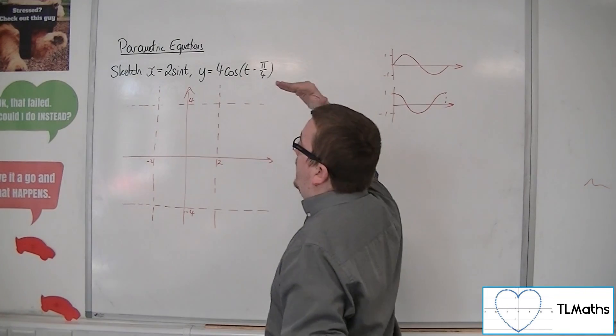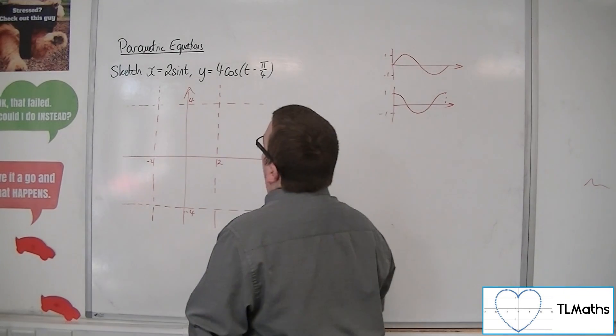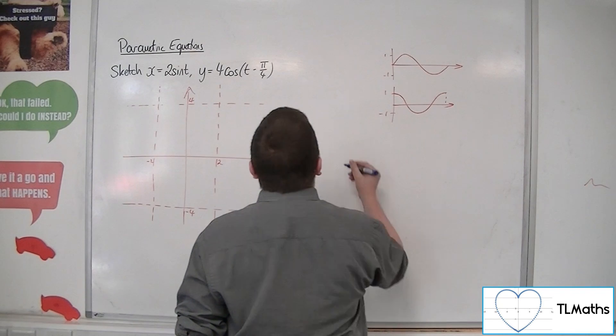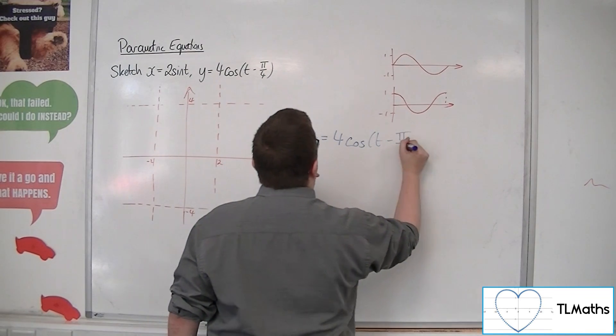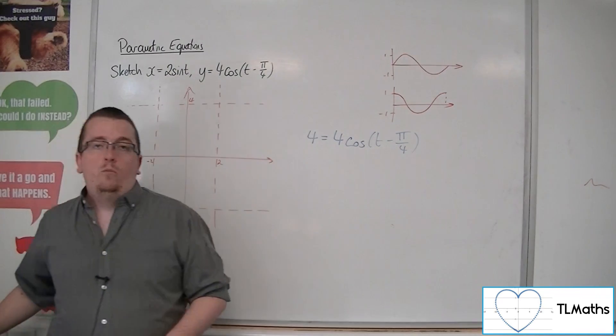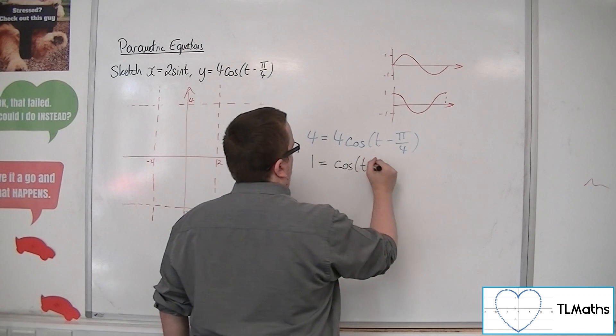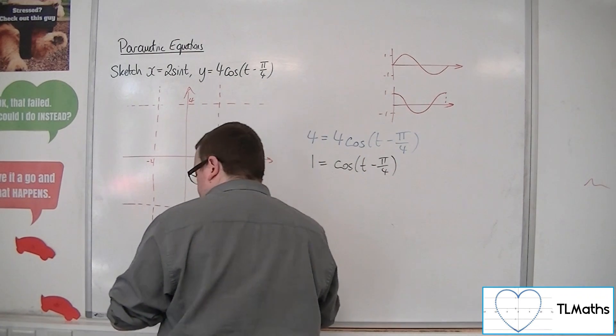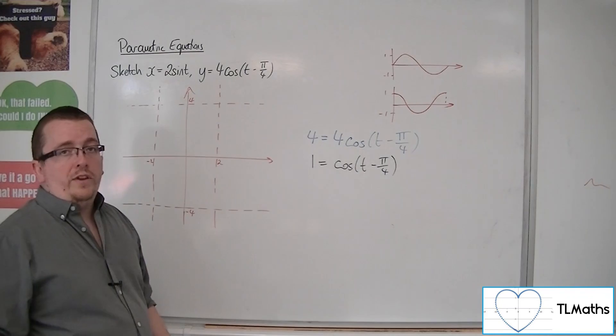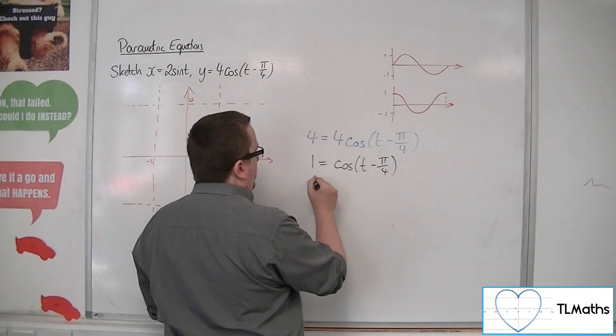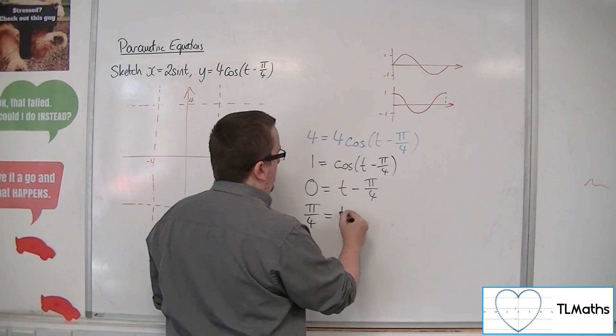So if it's going to hit the top of the box, that would be when y is 4. So I want to know the value of t when y is 4. So 4 equals 4 cos t minus pi over 4, because effectively what I'm doing here is I'm wanting to find when cos of t minus pi over 4 is 1. So cos is 1 when we're at 0. So 0 is equal to t minus pi over 4, so pi over 4 is equal to t.